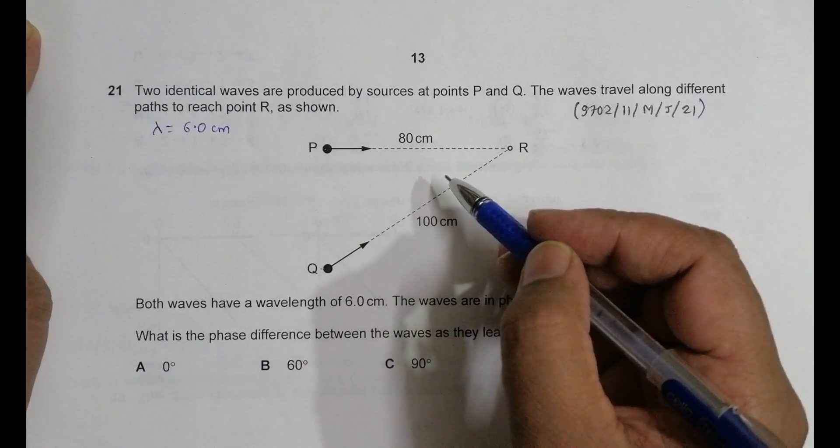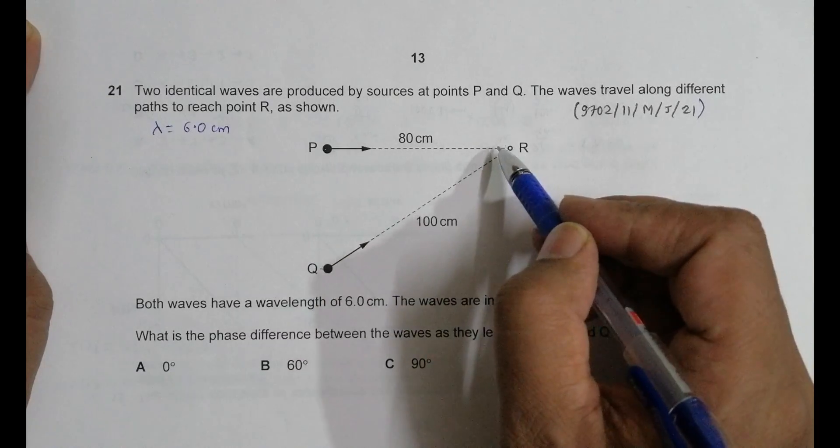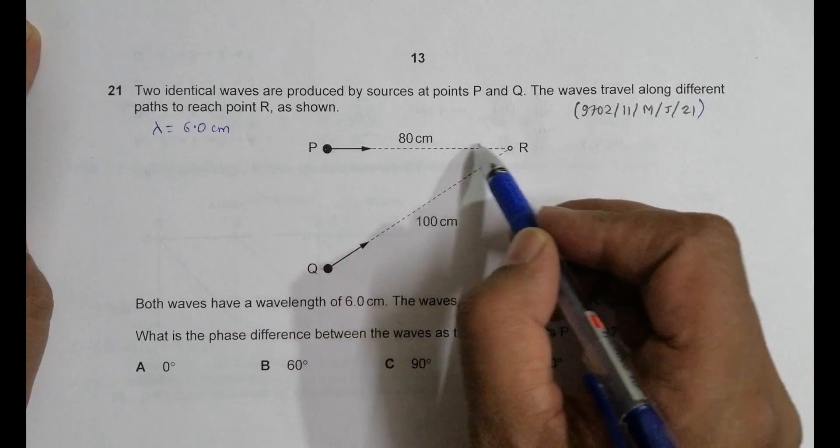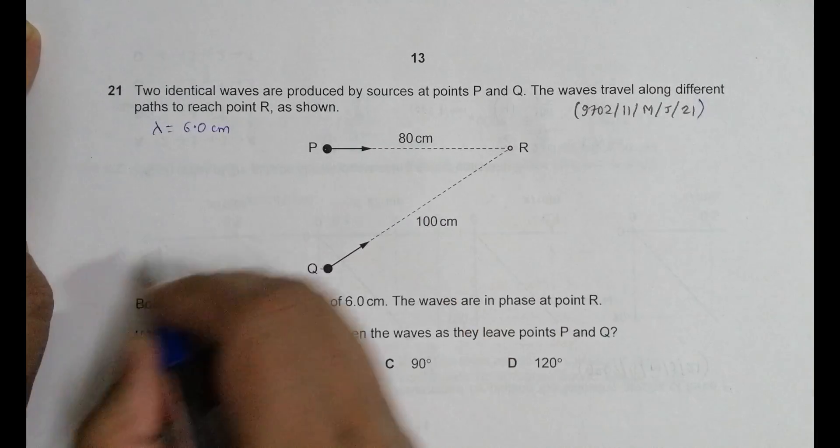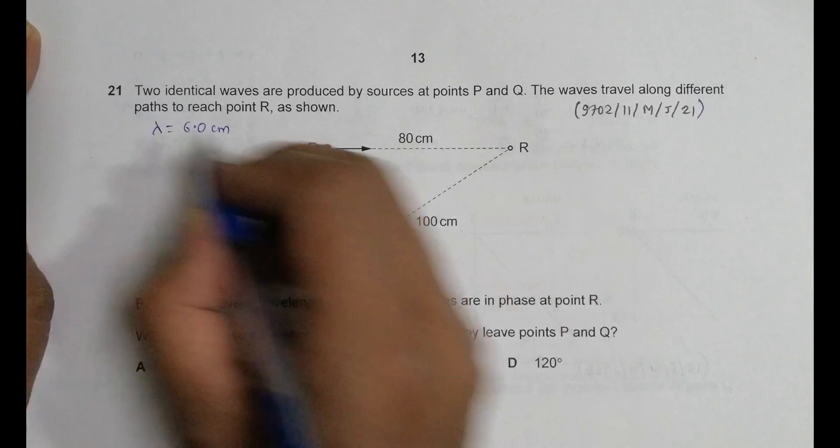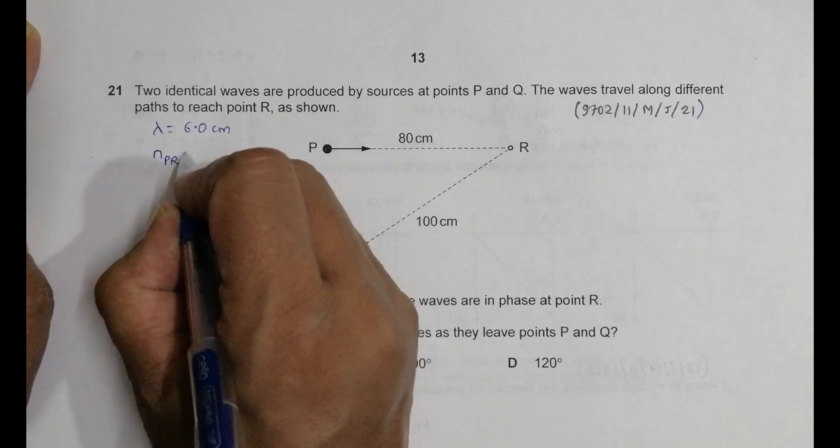So in order to find that we must first find how many waves can be adjusted within this thing and this thing. So how many waves can be adjusted in this 80 centimeter and in this 100 centimeter. So to find that, first let's find here the number of waves in the first path.